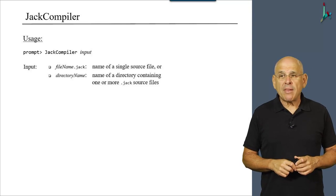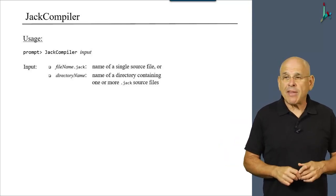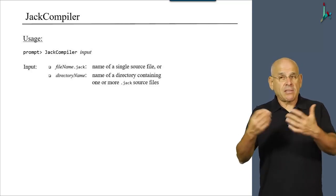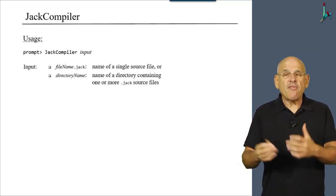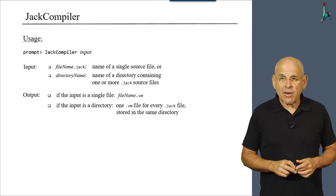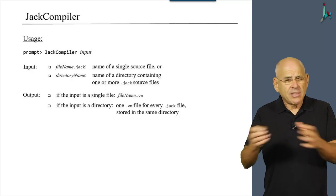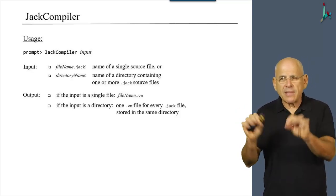Or this input can be the name of a directory. If it doesn't have an extension, it must be the name of a directory. In which case, the compiler is going to generate one VM file for every Jack file found in this directory. So what I just described is summarized in this output segment here.